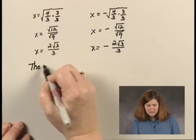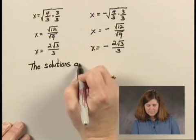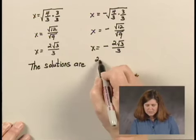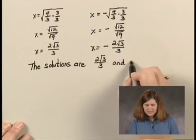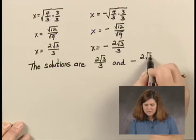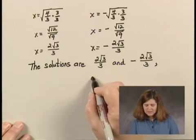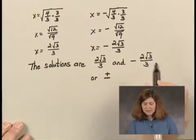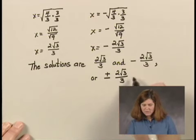So the solutions are, in simplified form, 2√3/3 and -2√3/3. These can also be written as ±2√3/3.